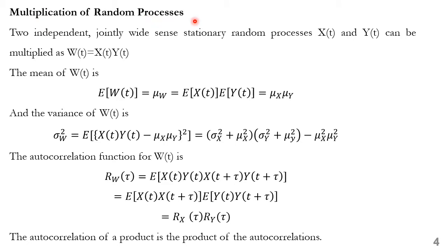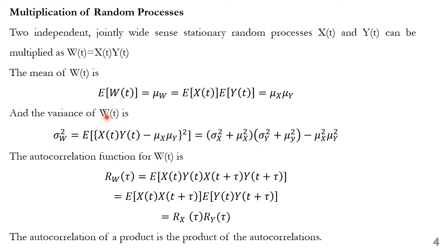Multiplication of random processes: consider two random processes x(t) and y(t) which are independent and jointly wide-sense stationary. Let the third random process w(t) be the product of x(t) and y(t). The mean of w(t), E[w(t)] = μ_w = E[x(t)] · E[y(t)] = μ_x · μ_y. The variance of w(t) is σ_w² = E[(x(t)·y(t) − μ_x·μ_y)²].